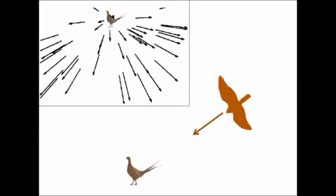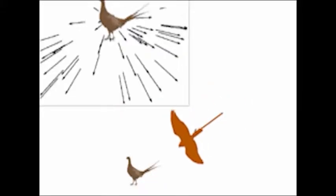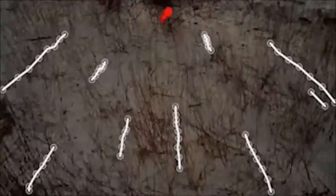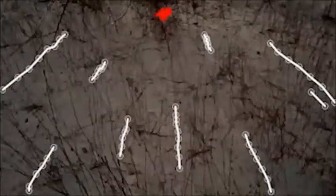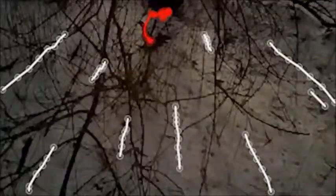Instead, for stationary targets and for prey that fled directly away, the goshawk used classical pursuit — flying directly towards its target while fixing the target's image at the center of motion. Note that the goshawk swerves at the end to avoid colliding with branches.